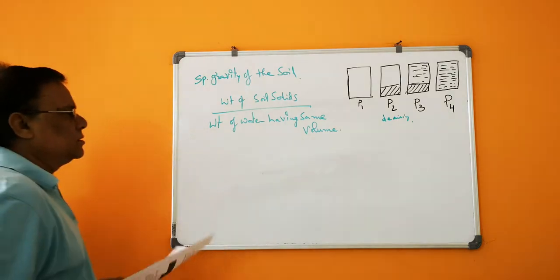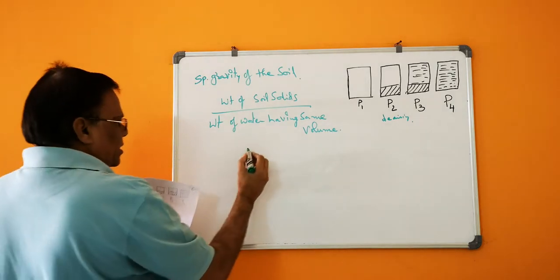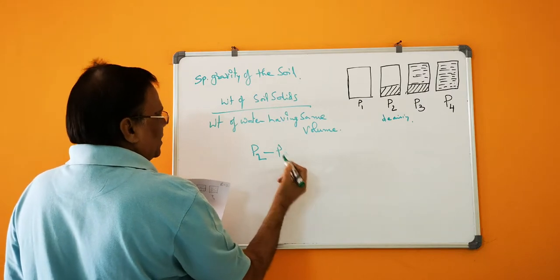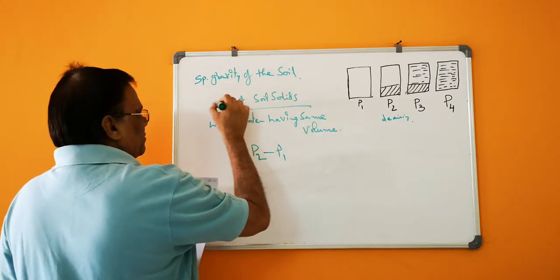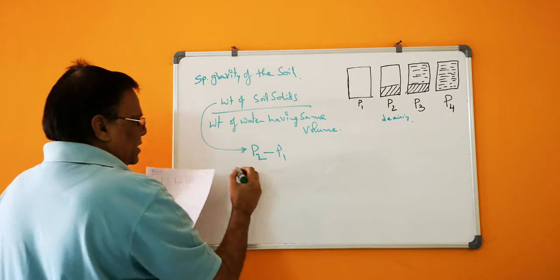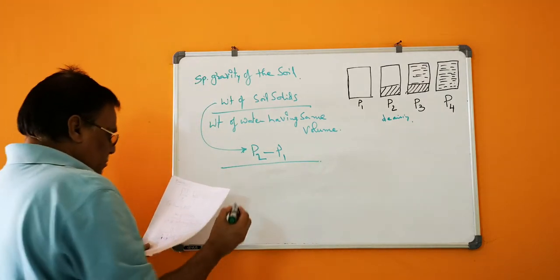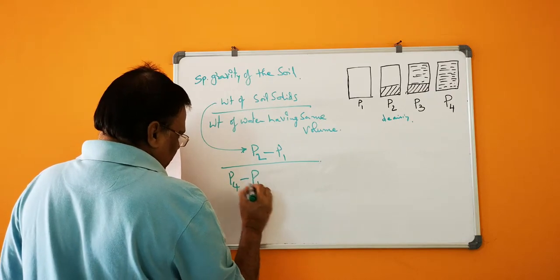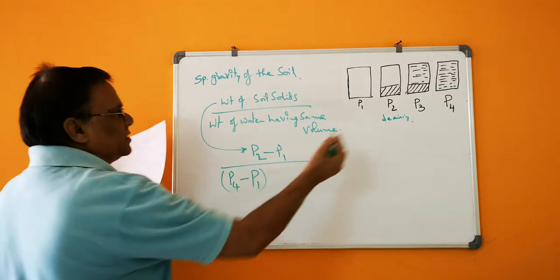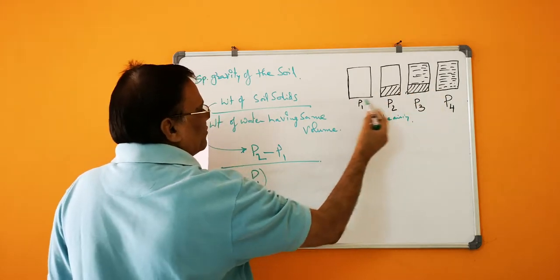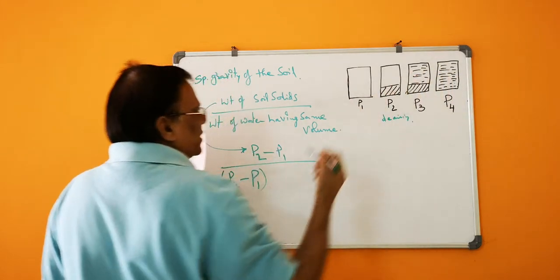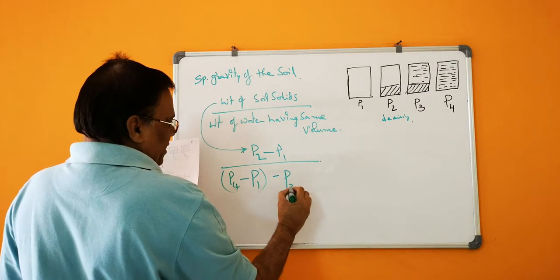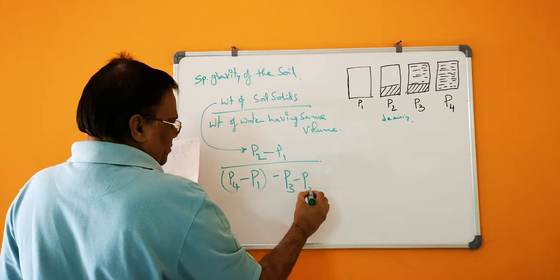So P2 minus P1 will give you weight of solids divided by P4 minus P1. P4 minus P1 is only water, that's the water. Minus P3 minus P2.